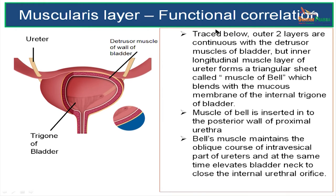Let us look at some more functional correlation of this muscularis layer. Traced below, the outer two layers of the wall of the ureter become continuous with the detrusor muscle of the bladder.